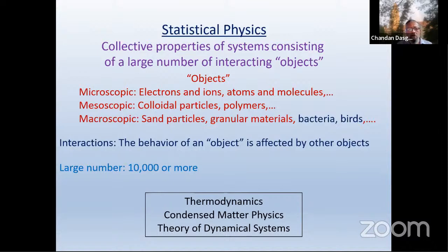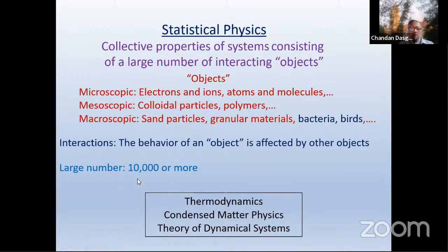More recently, this kind of description is being applied to study collections of even macroscopic objects, like sand particles. Today's talk will actually be concerned with living matter. People are now using this same framework to try to understand the properties of collections of bacteria, birds, and things like that. These objects are typically interacting, so they affect each other's dynamics. Generally, we'll be looking at systems consisting of a large number of such objects — typically 10 to the 4th, or in macroscopic matter, 10 to the 23.